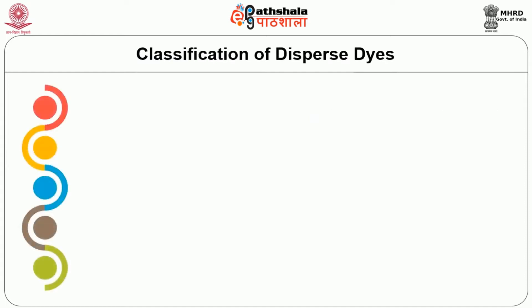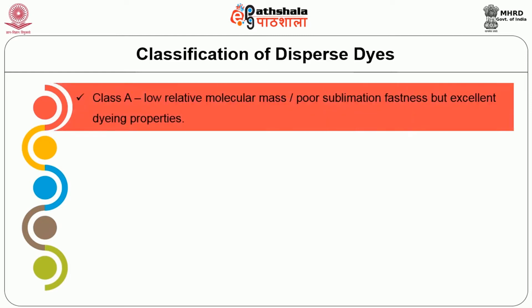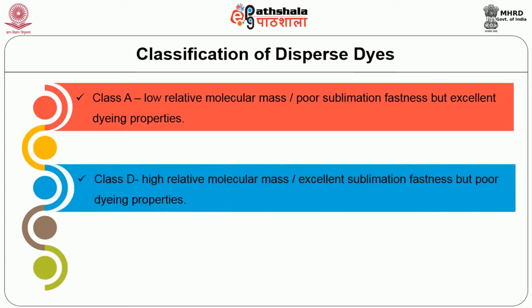Classification of disperse dye: based on dyeing properties and sublimation, disperse dyes are classified into class A to class D. Class A dyes have low relative molecular mass or poor sublimation fastness but excellent dyeing properties, so they are preferred whenever more depth of shade is required. Class D dyes possess high relative molecular mass and excellent sublimation fastness but very poor dyeing properties — they are preferred for printing of textile materials.